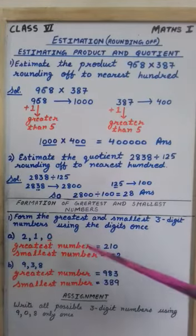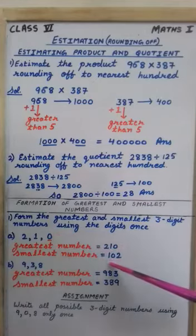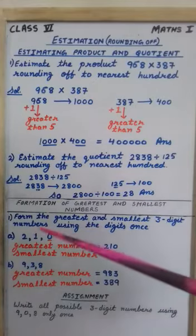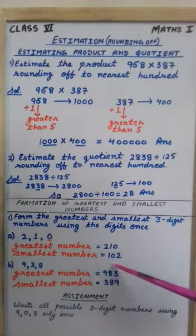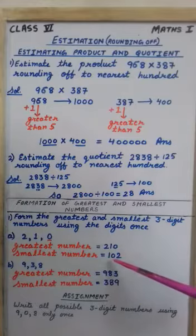So here first the smallest one is 1. After that second place yes we can write 0. And then after that the next number that is 2. So the smallest number is 102. Remember this 0 will not come here at the first place. Otherwise it will become a 2 digit number.